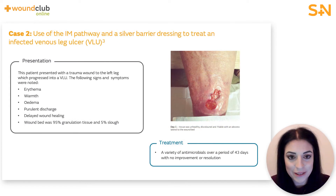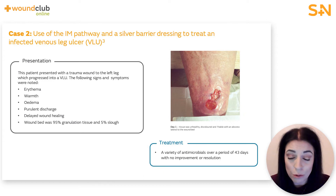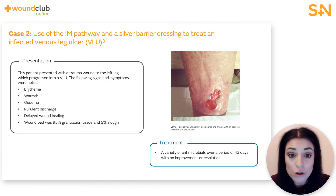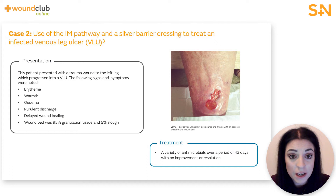Now let's look at case study two. This 76-year-old patient presented with a trauma wound on the right shin following a fall. The wound progressed into a venous leg ulcer and the patient was fully compliant with all treatment given, with no significant history noted. Three previous types of antimicrobial dressings were used over 43 days with no evidence of resolution of the signs and symptoms of wound infection. On assessment the wound was 42 millimetres in length and 23 millimetres wide, with a wound bed of 95% granulation tissue and 5% slough. Exudate levels were moderate and the patient was not experiencing pain.